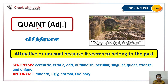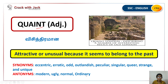Quaint describes something that seems to belong to the past — unusual in a charming or interesting way. The synonyms for quaint are: eccentric, erratic, odd, outlandish, peculiar, singular, queer, strange, and unique.